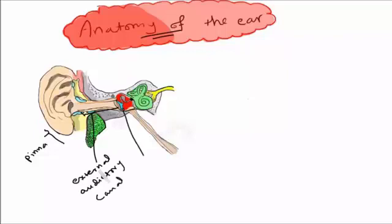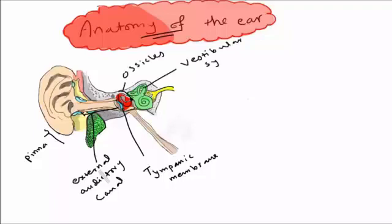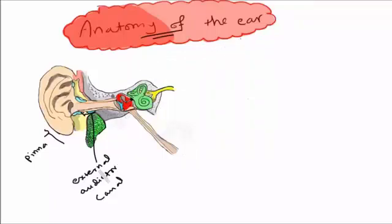We will start with the general structure of the ear. We have the ear pinna, the external auditory canal, and the tympanic membrane and the ossicles, the vestibular system, the cochlea, and both of them connected to the vestibulocochlear nerve.